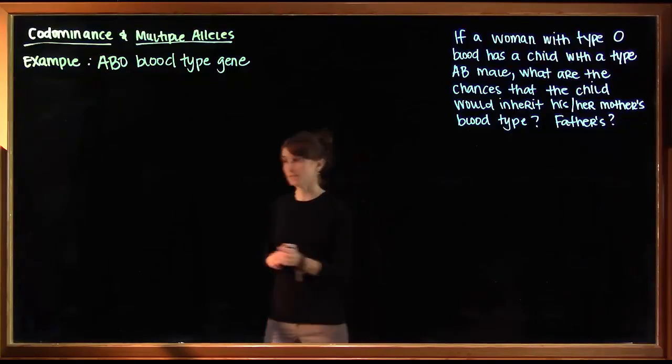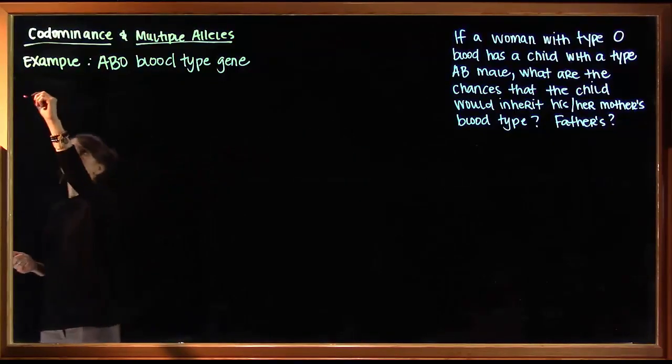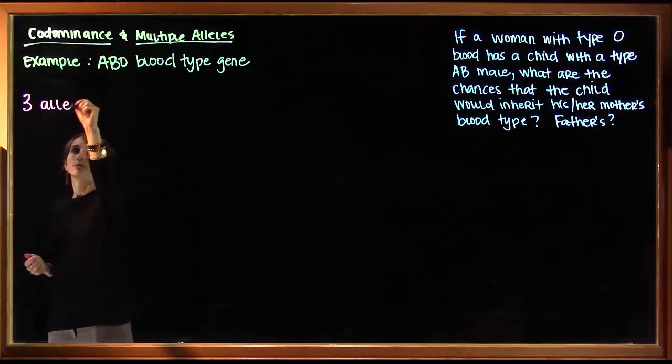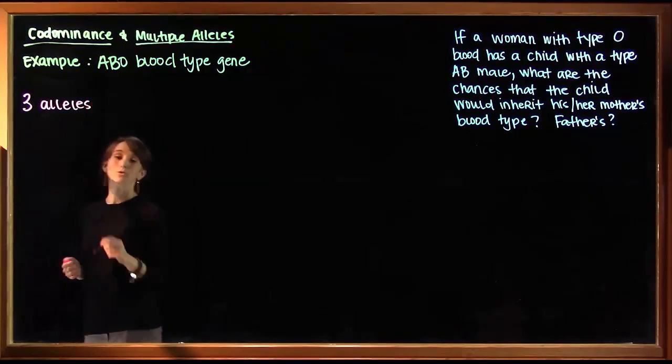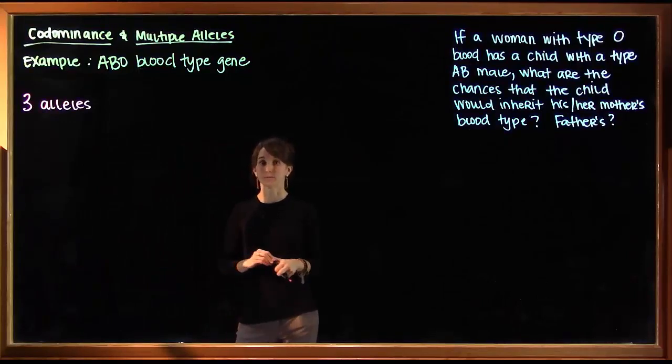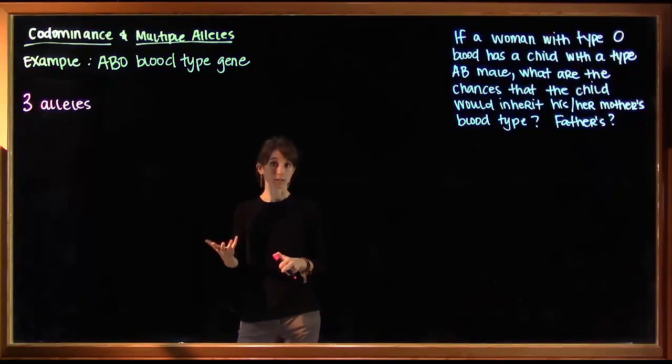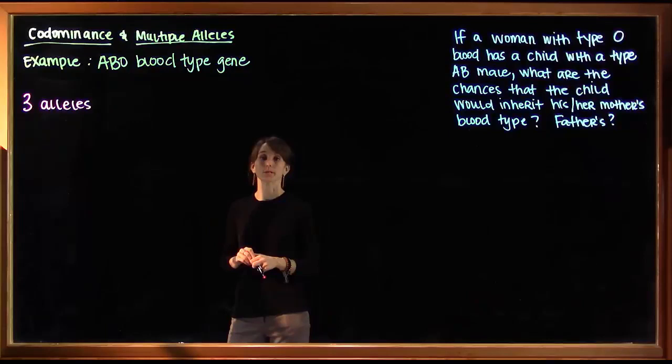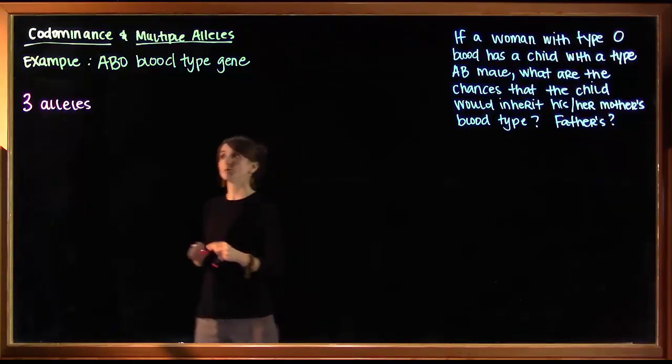This one gene has three different alleles instead of the two that we're used to working with. We have two dominant alleles and a recessive allele. By convention, our dominant alleles are usually notated with capital letters. So we'll do the same here.